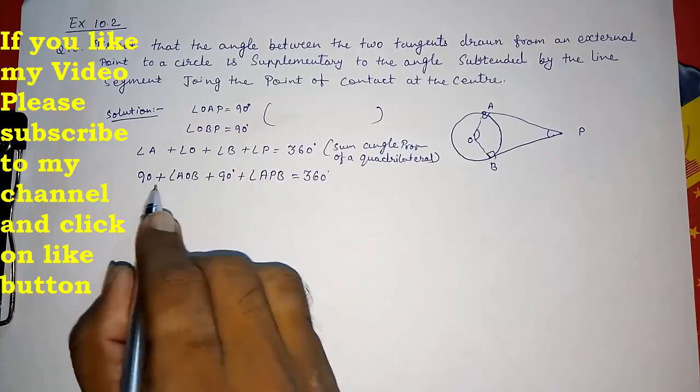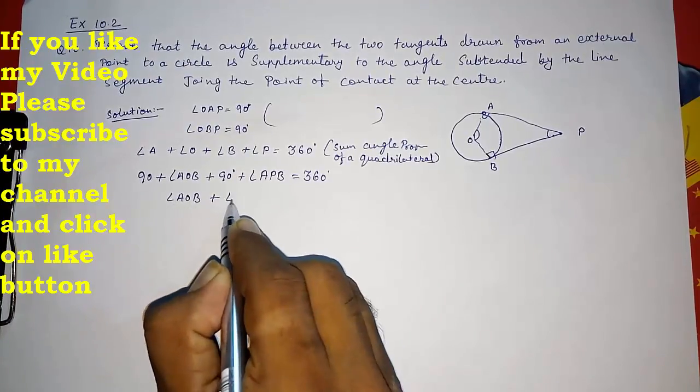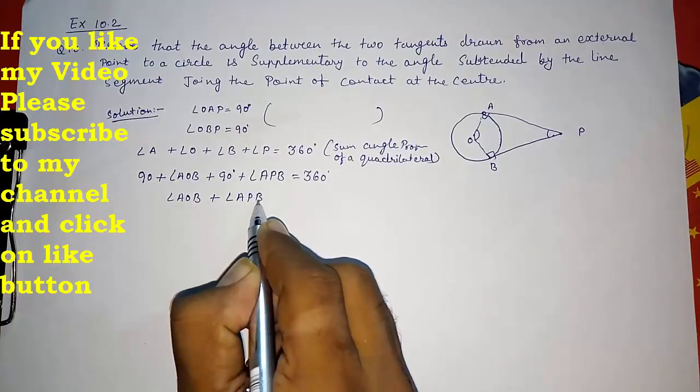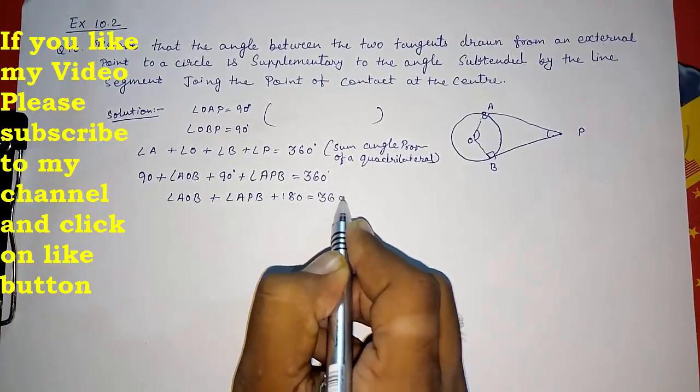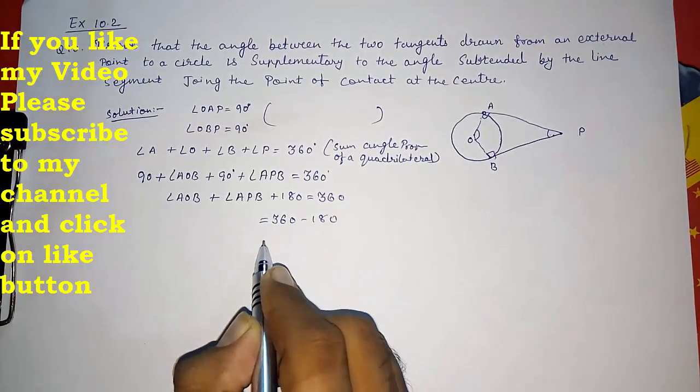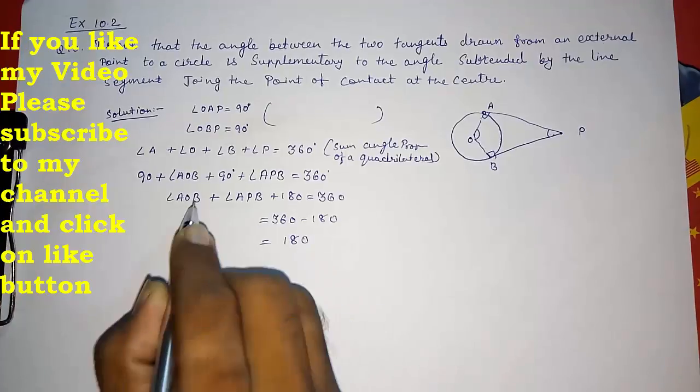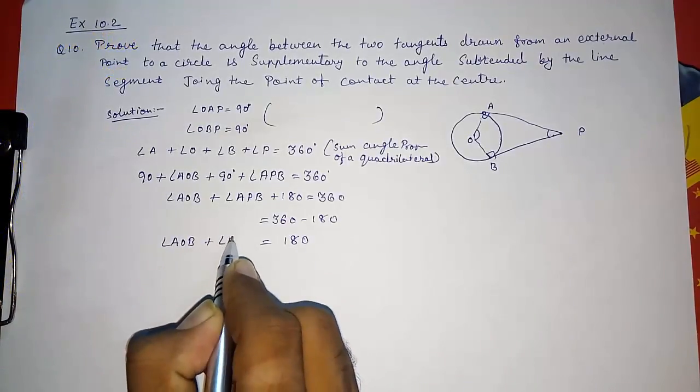Now we know the sum will be 180 degrees. Angle AOB plus angle APB plus 180 gives you 360. Now take this 360 minus 180, this will be 180. You have to carry this AOB plus APB, so this way we can prove that the sum of the opposite angles are supplementary.